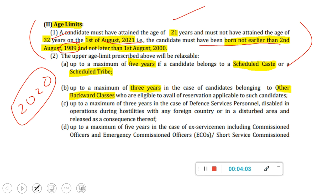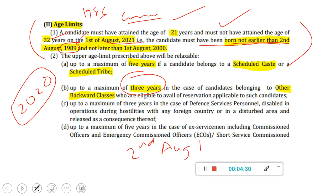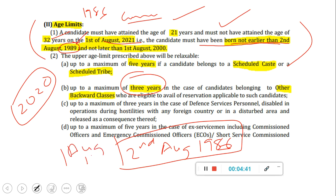The candidate must have been born not earlier than 2nd August 1989 for general category. So for general category it is very easy to see whether you fit — if you are born earlier than that, you are not applicable. When it comes to OBC and SC, OBC gets three years relaxation, so you have to read it as born not earlier than 2nd August 1986. Meaning if your birthday is before 2nd August 1986, then you are not eligible. The concern students have is that a person with a birthday on 1st August 1986 is not getting an attempt because it's before the cutoff, but a 3rd August person is getting an attempt.